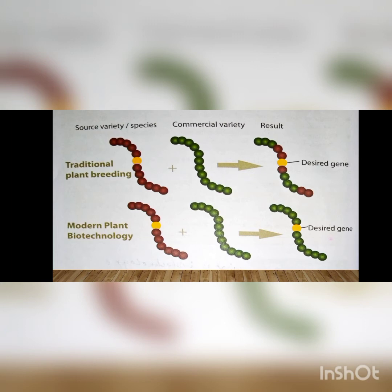We want this desired gene to be in the commercial variety, which is green in color. Two plants have been formed — this is the hybrid plant. The species are combined, but we only need the yellow color gene. However, the dark purple and dark red color genes also came into it, which we did not need.